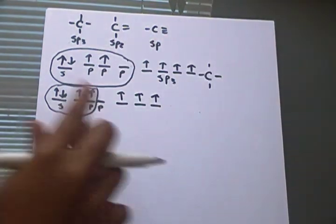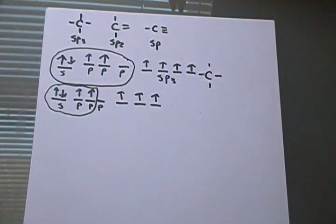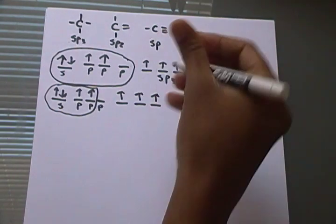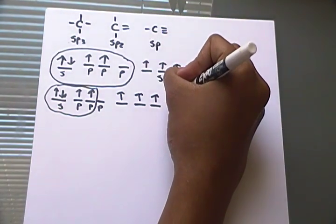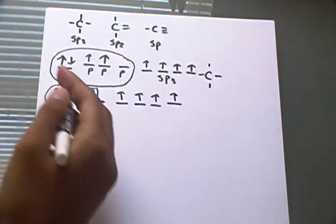But what about that P orbital? Well, that stays the same. It doesn't go anywhere. It doesn't magically disappear. It remains here with one electron that it gets.